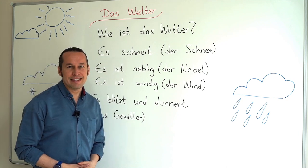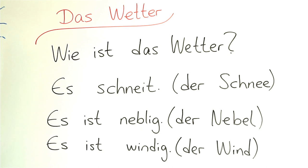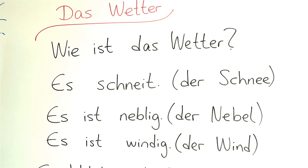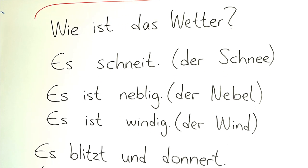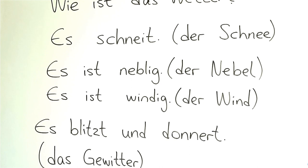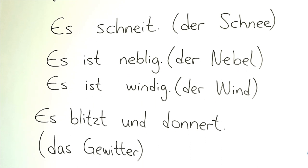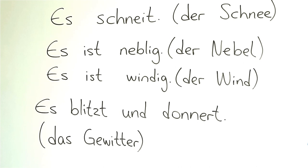I want you to repeat after me, please. Wie ist das Wetter? Es schneit. Der Schnee. Es ist neblig. Der Nebel. Es ist windig. Der Wind. Es blitzt und donnert. Das Gewitter.